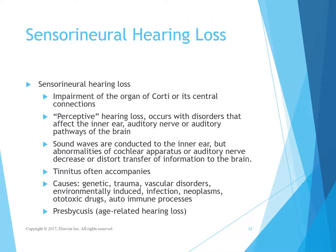Sensorineural hearing loss is impairment of the organ of Corti or the central connections. It occurs with disorders affecting the inner ear, auditory nerve, or auditory pathways of the brain. Sound waves reach the inner ear, but abnormalities of the cochlear apparatus or auditory nerve decrease or distort transfer of information to the brain. Tinnitus often accompanies this — it is the first sign, and can progress to a high-pitched tone. Sensorineural hearing loss is permanent. Presbycusis is age-related hearing loss and the most common form of sensorineural hearing loss in the elderly.